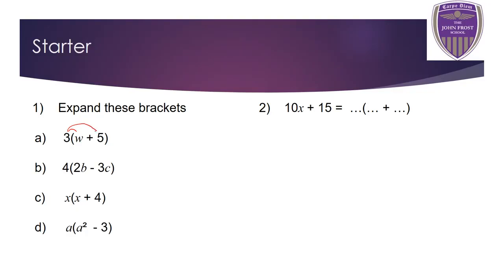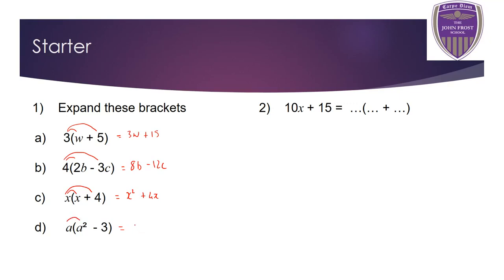A reminder: to expand the bracket you multiply a bracket by what's in front of the bracket, so every term in the bracket needs to be multiplied by that value. On this first one, three times w gives 3w, three times five gives 15. On the second bracket, multiplying through by four gives 8b take away 12c. Sometimes we have a letter outside the brackets: x times x gives x squared, and x times four gives 4x. Finally, a squared times a gives a cubed, and three times a gives 3a.